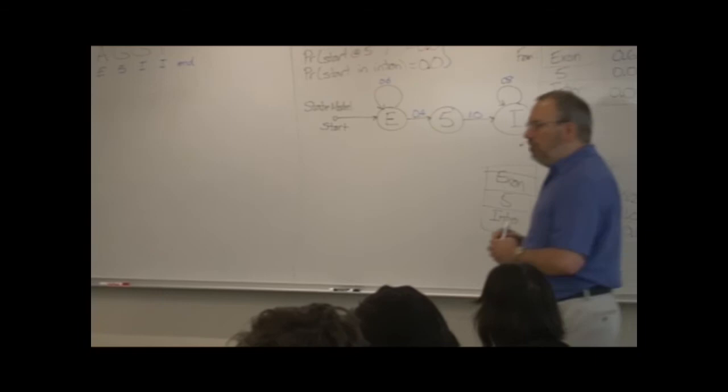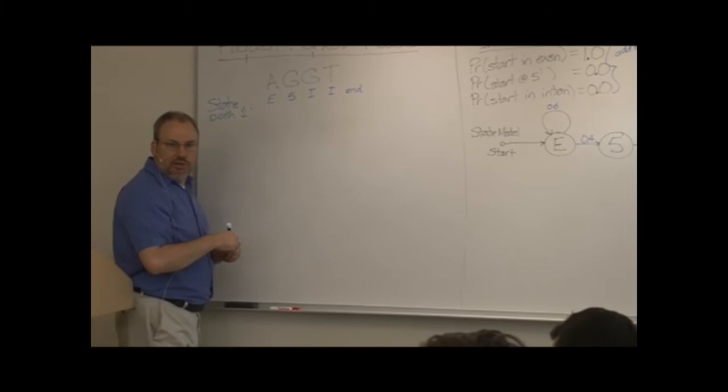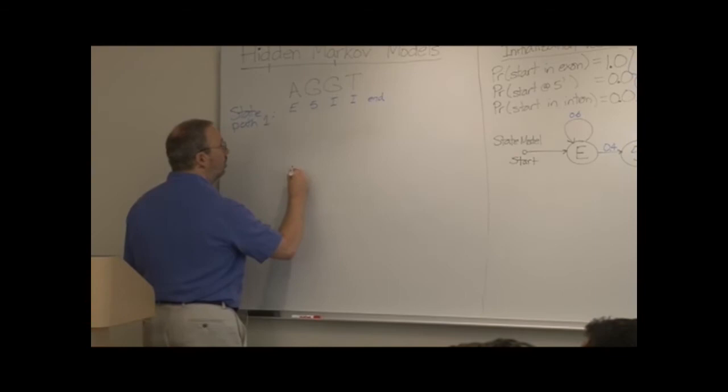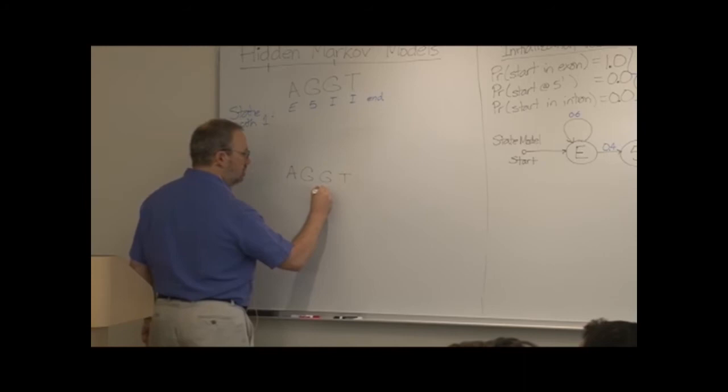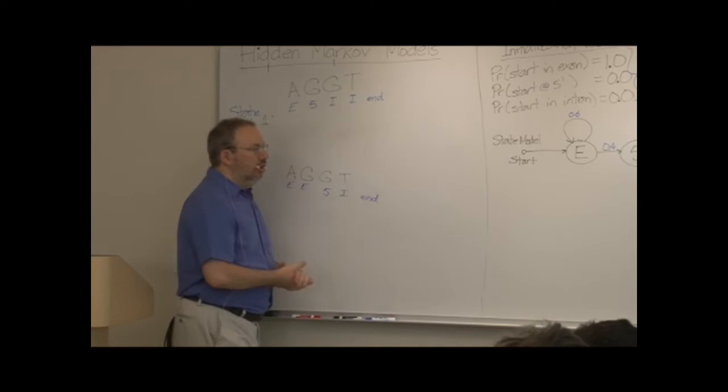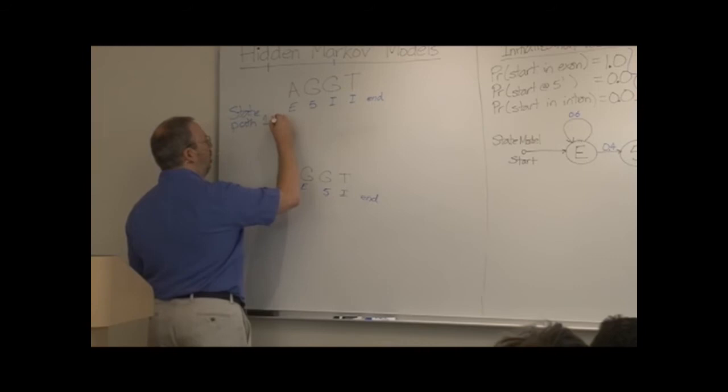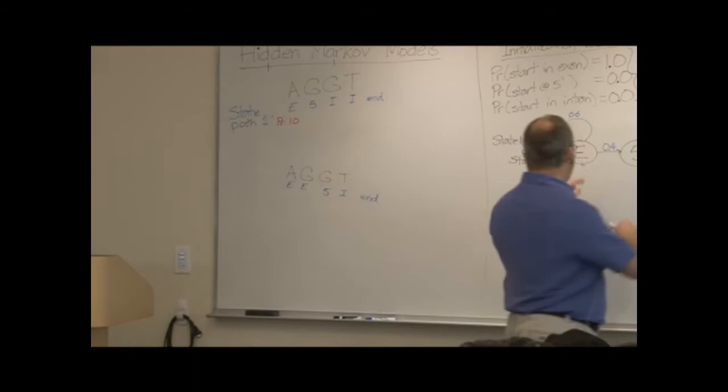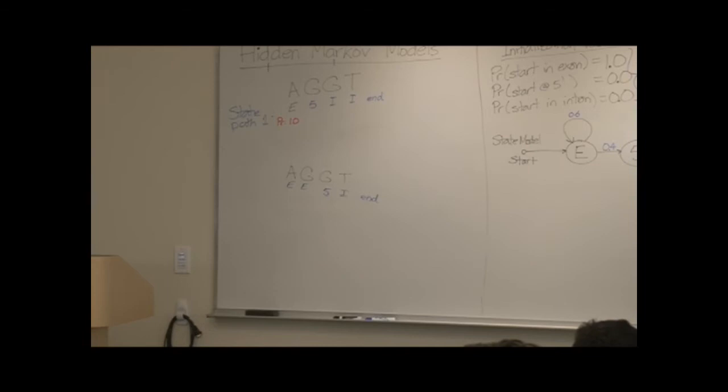Are there other state paths that also are consistent with this model? Can you say that again, please? Perhaps the second G is the five prime splice site, which would make these first two exons, this an intron, and then the end. What's the probability that this first nucleotide is going to be in an exon? By definition, the probability is one.